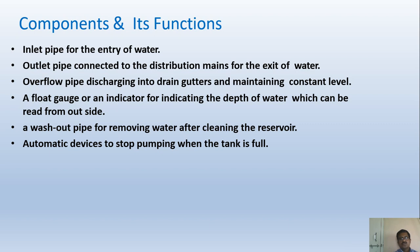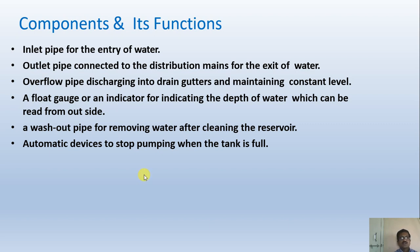The overflow pipe ensures water does not spill from the top but is discharged to drain gutters. A float gauge pipe shows the water level present in the tank. The washout pipe is part of maintenance — after a typical period, the reservoir is washed and the washout water is removed through this pipe. Automatic devices, such as float gauges synchronized with an electronic system, stop the pump automatically when the tank is full.